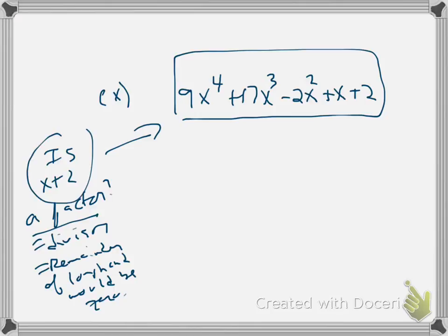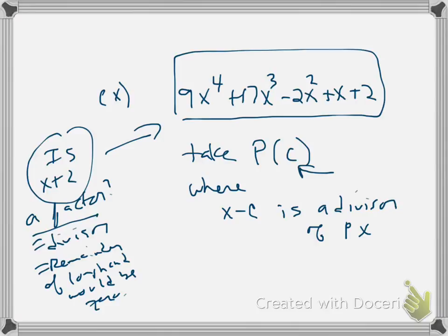Well, you may be inclined to take x plus 2 and do longhand division and see if the remainder comes to be zero, but we weren't asked to do that. We were asked to use the factor theorem. So factor theorem basically says take p and evaluate it at a constant. Now, the thing is, the constant has to be where x minus... All these theorems hinge on x minus c being a divisor of the polynomial function.